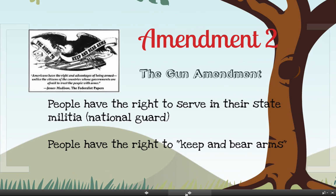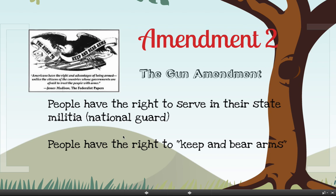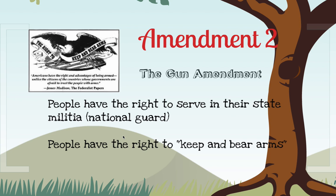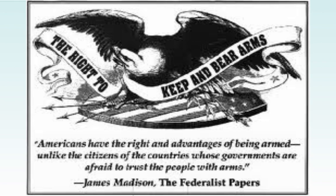Moving on to Amendment 2 — this is a very controversial amendment. I refer to it as the Gun Amendment, because it protects your right to own a weapon. The Second Amendment allows you to serve in your state militia, and it also says that the people have the right to keep and bear arms, meaning they can own, possess, and use a firearm. James Madison said: 'Americans have the right and advantages of being armed, unlike the citizens of countries whose governments are afraid to trust the people with arms.' Madison believed it was an important right because the government trusts citizens to have guns and not use them in the wrong way.